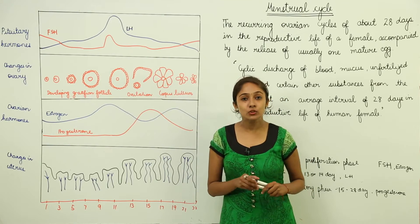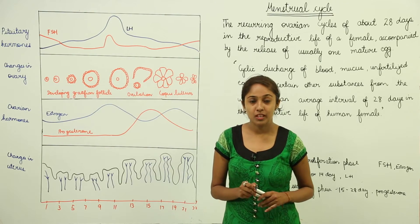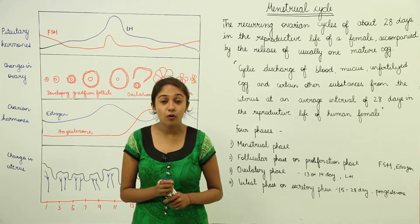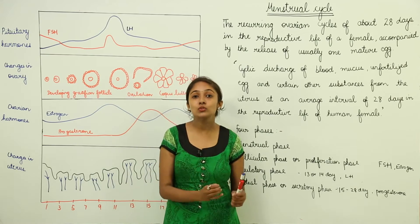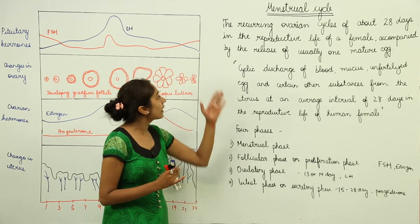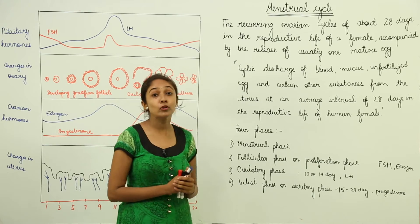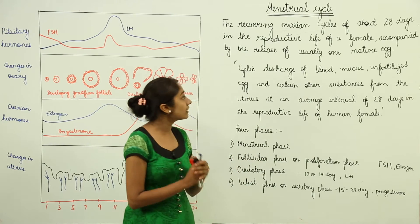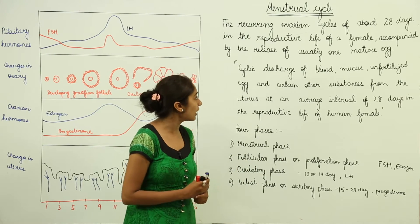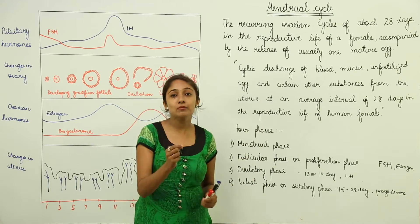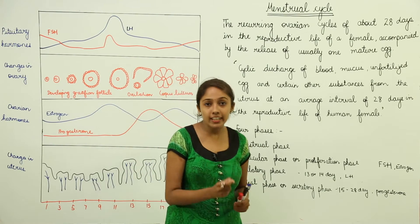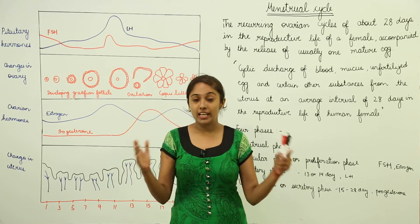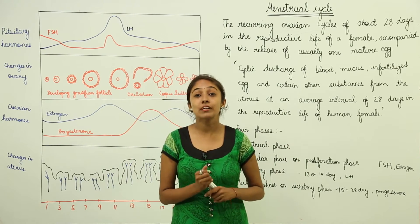Let's discuss the menstrual cycle in females. The menstrual cycle is defined as the recurring ovarian cycle of about 28 days in the reproductive life of a female, accompanied by the release of usually one mature egg. In 28 days, one mature egg is released, and this cycle continues, known as the menstrual cycle.